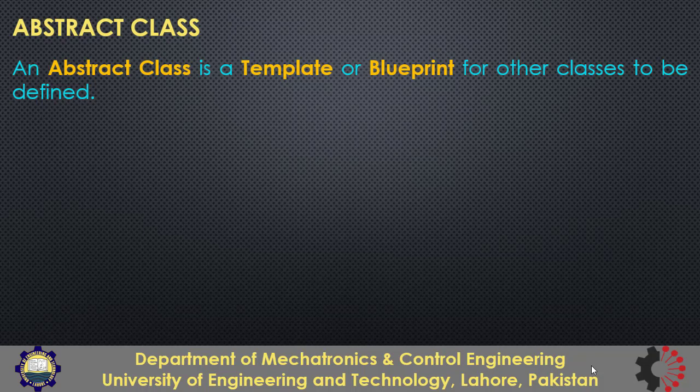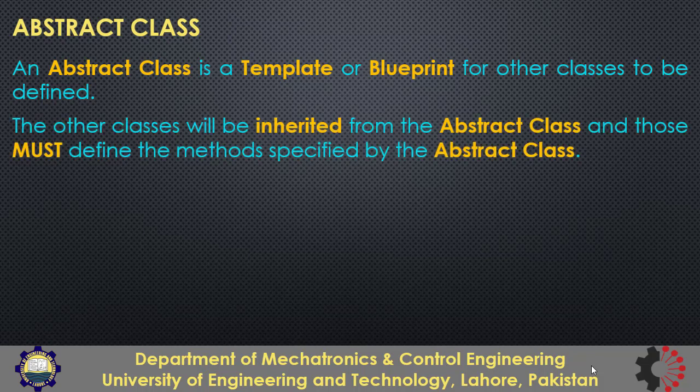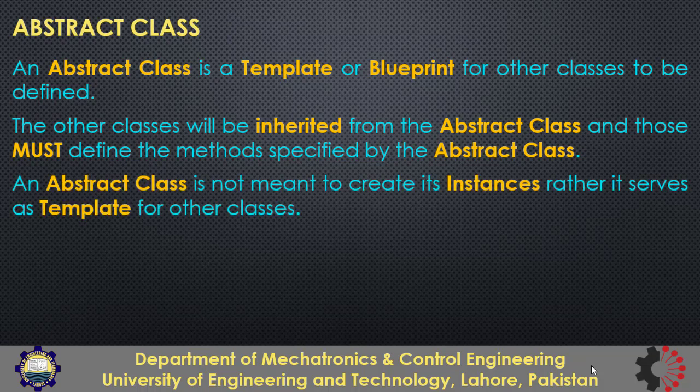An abstract class works like a template or blueprint for other classes to be defined. Those other classes will be inherited from this abstract class, and they must define the methods specified by the abstract class, known as abstract methods. Recall that in object-oriented programming, we consider a class as a template or blueprint for its objects. Abstract class does the same thing for other classes — it defines the behavior of the classes inherited from it. An abstract class is not meant to create its own objects; it is just used as a template for other classes.